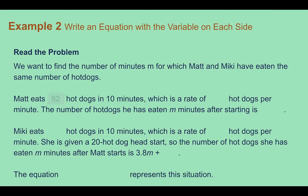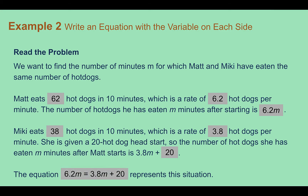We want to figure out the number of minutes, m, where Matt and Mickey have eaten the same number of hot dogs. Matt eats 62 hot dogs in 10 minutes, which is a rate of 6.2 hot dogs per minute, so the number he eats in m minutes is 6.2m. Mickey eats 38 hot dogs in 10 minutes, a rate of 3.8 per minute. Because she's given a 20 hot dog head start, after m minutes her expression is 3.8m plus 20. We set them equal: 6.2m equals 3.8m plus 20, with Matt on one side and Mickey with her head start on the other.